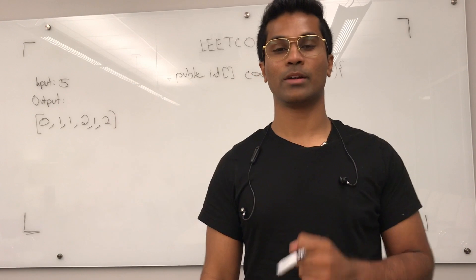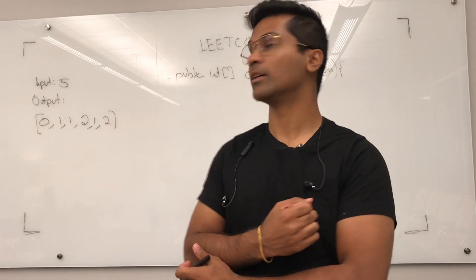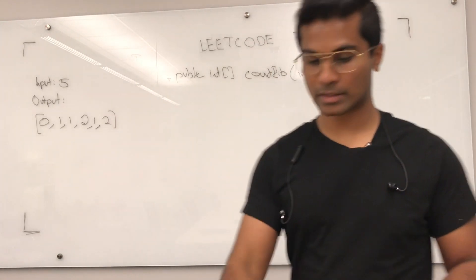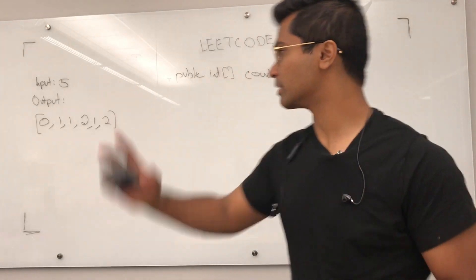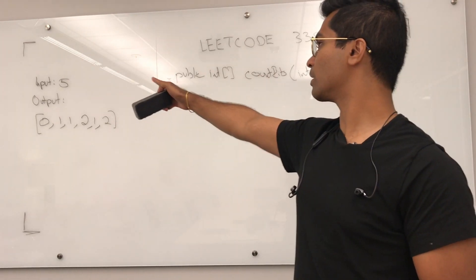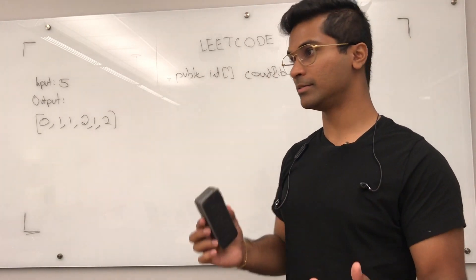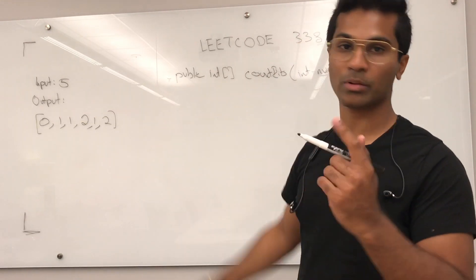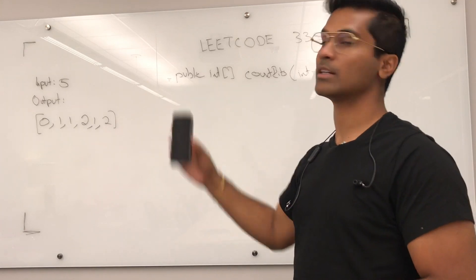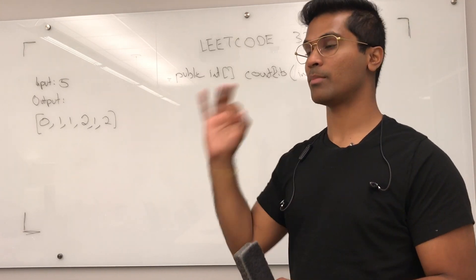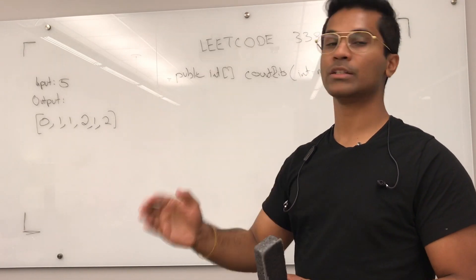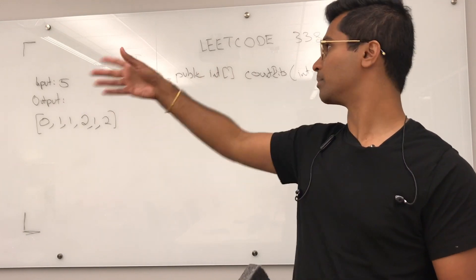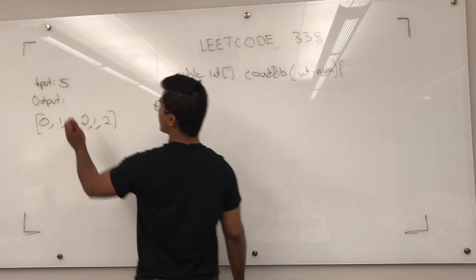What's up everyone! Today we're going to be going over LeetCode 338, Count Bits. The input is going to be a number and the output is going to be an array of size that number plus one, because that array is going to be filled with the number of bits in each of those numbers which lead up to the given one.